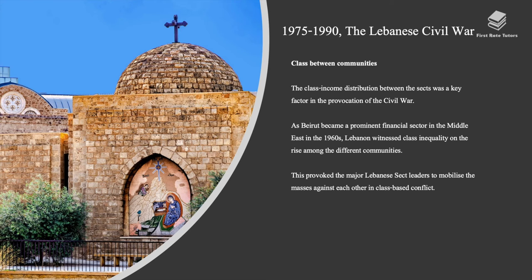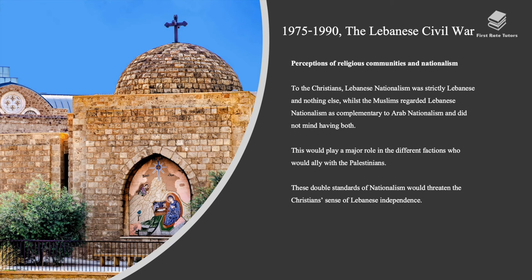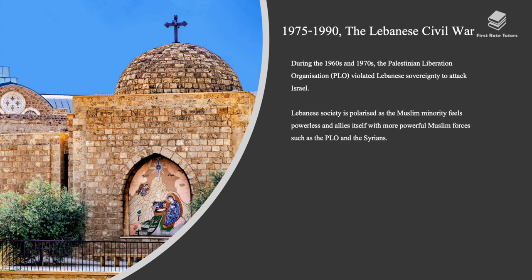This provoked major Lebanese sect leaders to mobilize the masses against each other in class-based conflict. To the Christians, Lebanese nationalism was strictly Lebanese and nothing else, whilst the Muslims regarded Lebanese nationalism as complementary to Arab nationalism. This would play a major role in determining which factions allied with the Palestinians. These double standards of nationalism threatened the Christian sense of Lebanese independence. During the 1960s and 1970s, the Palestinian Liberation Organization violated Lebanese sovereignty to attack Israel, and Lebanese society became polarized as the Muslim minority allied itself with more powerful Muslim forces such as the PLO.